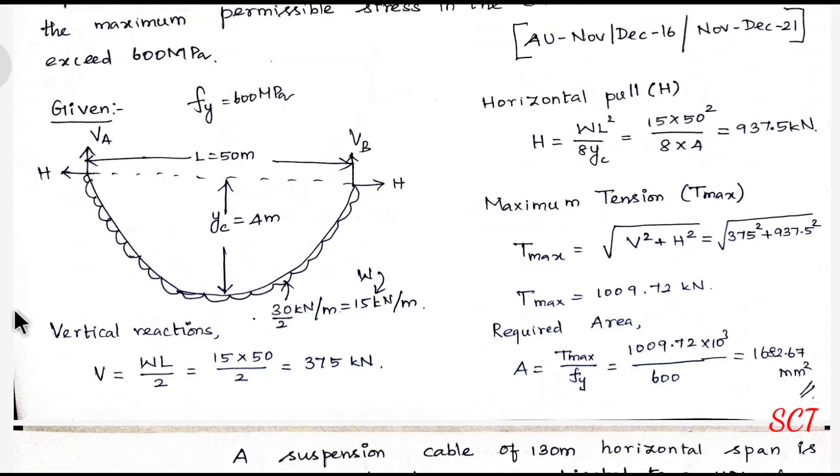Next, we calculate the horizontal pull H. Using the formula H equals WL squared over 8YC, this gives H equals 937.5 kilonewtons. The maximum tension T max equals square root of V squared plus H squared, which gives 1009.72 kilonewtons.